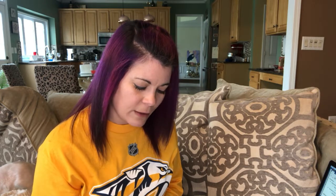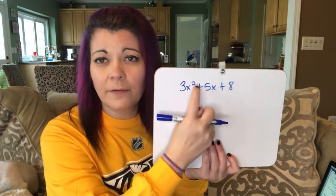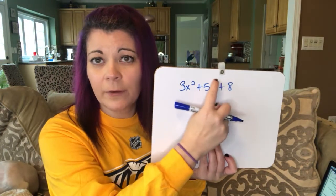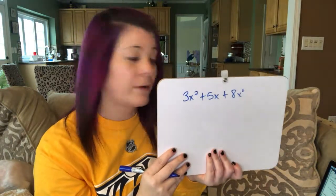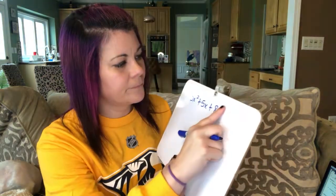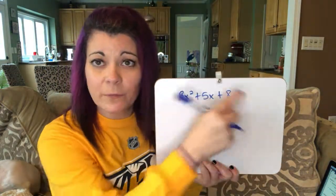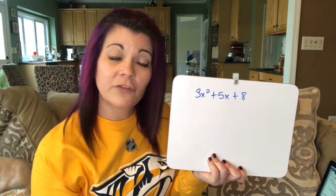Let's talk about standard form. Standard form is writing in decreasing value of exponents. So like 3x squared plus 5x plus 8 — that's in standard form because we have an exponent of 2, an exponent of 1, and then technically an exponent of 0, because an exponent of 0 is just nothing there. So it's written in decreasing order by exponents, and that is standard form.